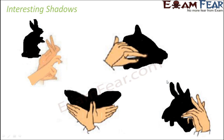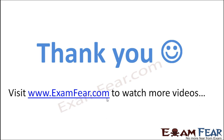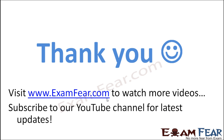So basically, the shape of an object doesn't necessarily tell us what the shape of its shadow will be. With one particular object, you can have multiple shapes of shadows. For example, with a cylinder: if light falls on one surface, you might get a rectangle as a shadow; if light falls on another side, you might get a circle as a shadow. So it depends on the orientation of the incident light as well. Thank you — please visit examfear.com to watch more educational videos, and don't forget to like and subscribe to our YouTube channel for latest updates.